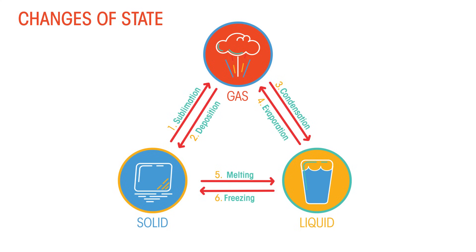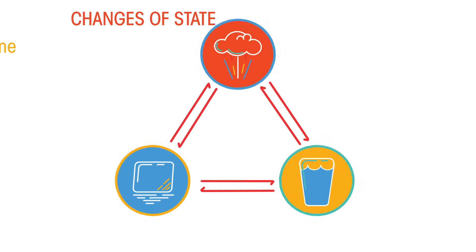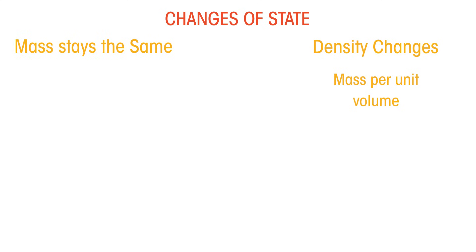Our final thing to discover is that when a material changes states, the mass stays the same. The density changes, so the mass per unit volume, but the mass does not change.